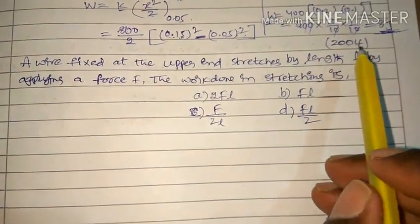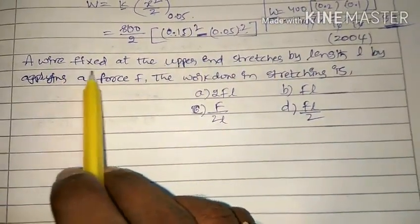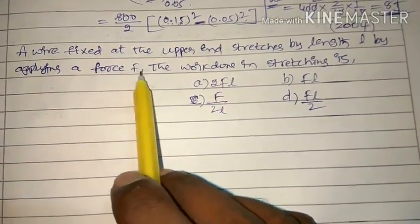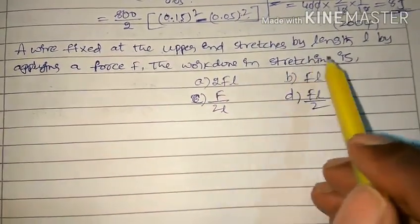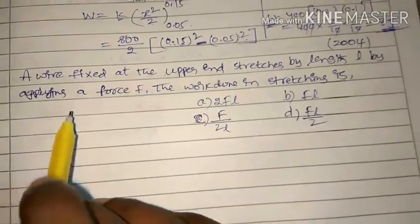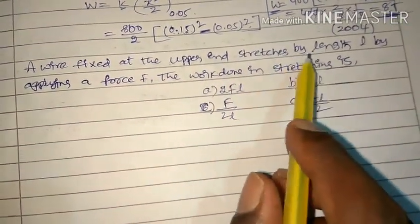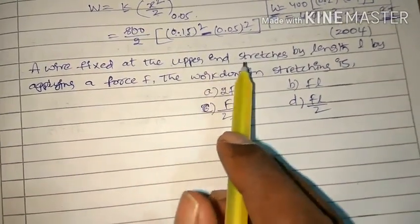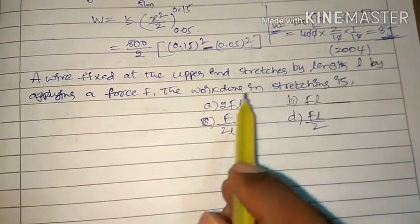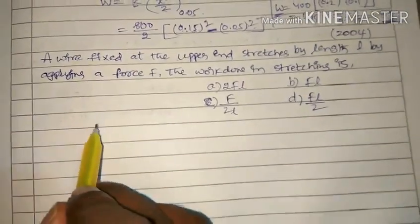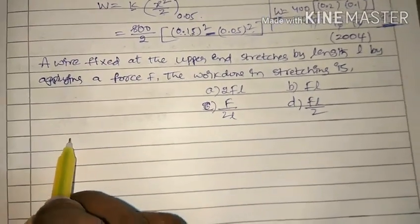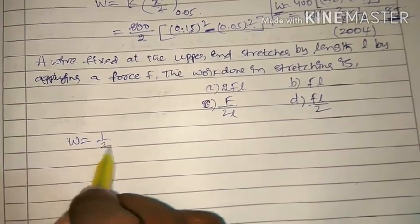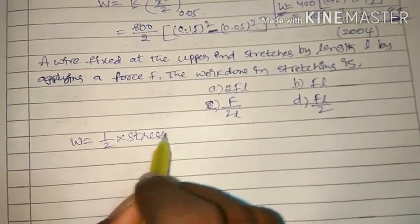The next question was asked in 2004. A wire fixed at the upper end stretches by length l by applying a force F. The work done in stretching it — for stretching the wire up to length l, the work done is stored as potential energy: W = (1/2) × stress × strain × volume.